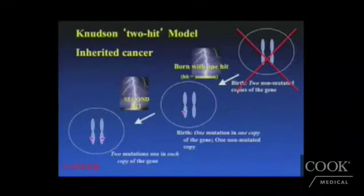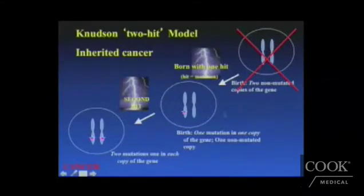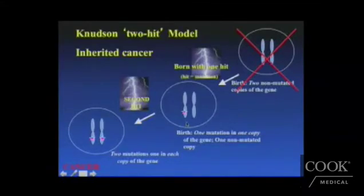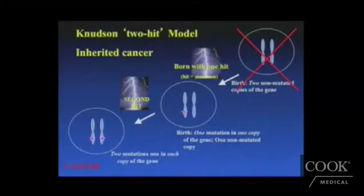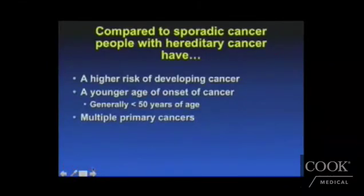We can understand why a patient with inherited colon cancer has a much higher risk for developing colon cancer. That's because they are born with a mutation already in one copy of the gene. So over their lifetime, if another mutation happens to the other gene — which is much easier than having mutations happen to both genes — their risk of developing cancer is that much higher compared to someone with sporadic colon cancer. Patients with hereditary colon cancer are obviously at a much higher risk.